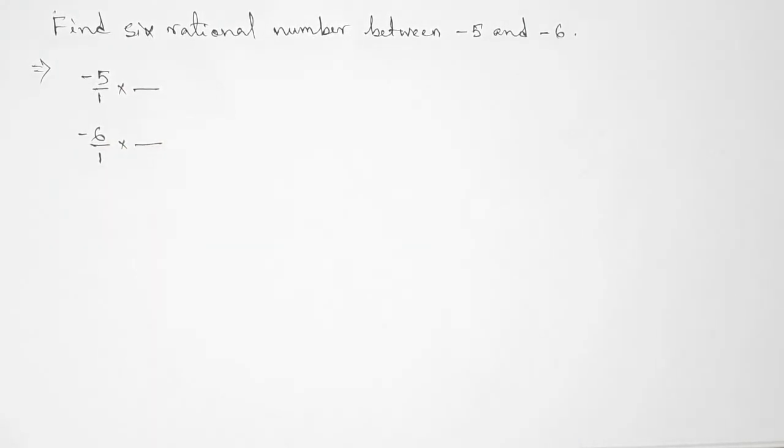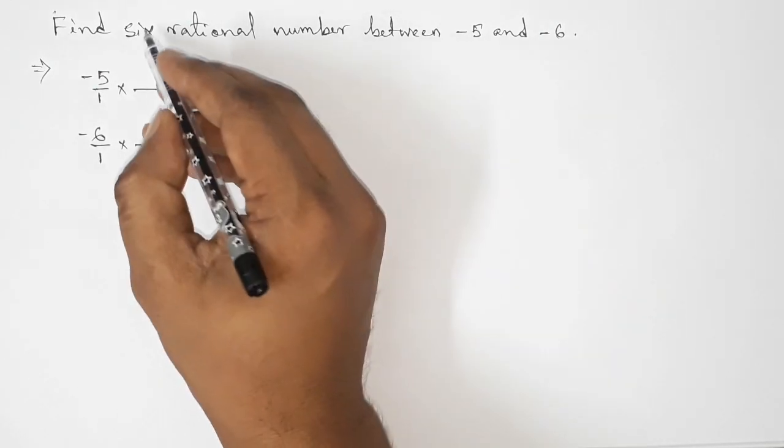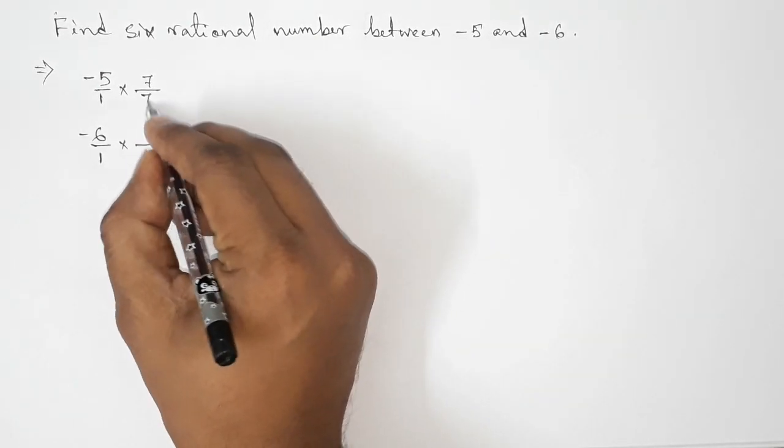Next, we have to multiply both numbers. So here we have to find six rational numbers, so we should multiply both numbers by seven, up and down, by this way.